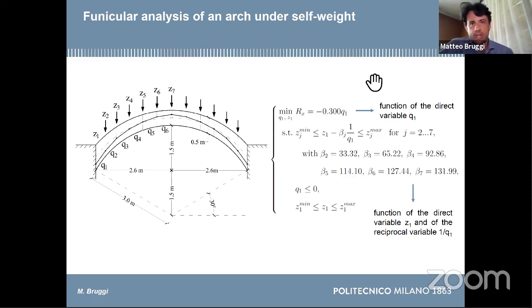The objective function can be, for example, the thrust if you would like to minimize the horizontal reaction. There is a set of local constraints. The first one uses the vertical equilibrium to write the coordinates of the nodes with respect to the minimization unknowns. The second one refers to the research of antifunicular structures, the control on the sign of the forces and force densities. Looking at this problem, it's important to see that the objective function is written in the direct variable q1, and the constraints are a function of the direct variable z1 but the reciprocal variable 1 over q1.